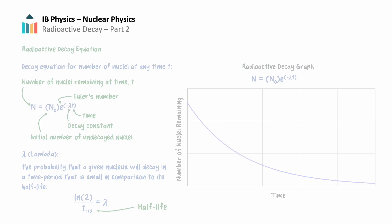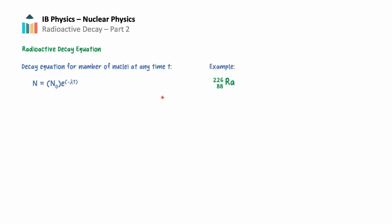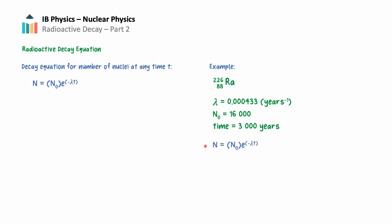Let's look at a sample problem that uses the decay equation. Radium-226 emits alpha particles and has a decay constant of 0.000433 decays per year. If a sample initially has 16,000 radionuclei, how many radionuclei will remain after 3,000 years? Using our equation n equals n-sub-0 times e to the negative lambda t, plug in the values: n equals 16,000 times e to the negative 0.000433 times 3,000. We get an answer of approximately 4,300 radionuclei remaining.